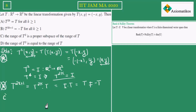Now let us come to option C. It says range of T² — where R denotes the range — is a proper subspace of range of T. That means they are saying there exists an element from range of T such that that element is not inside range of T². This is the meaning of proper subspace. But we have seen that T² is the identity operator.